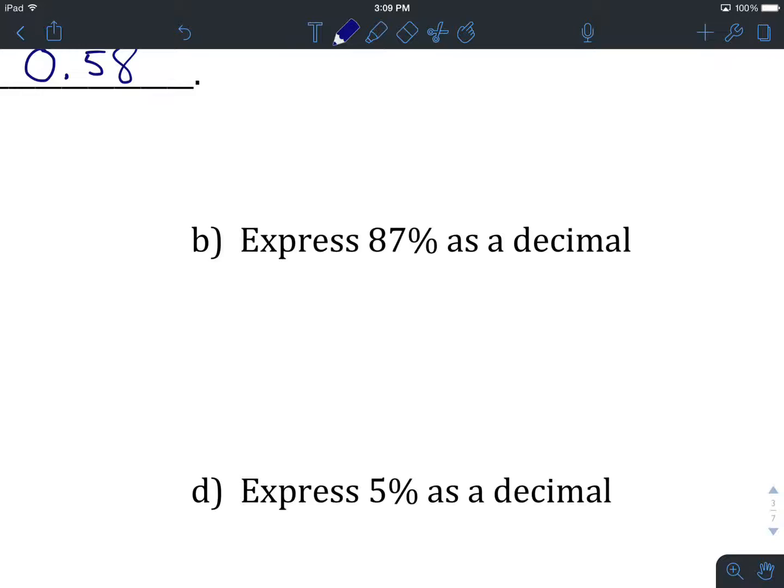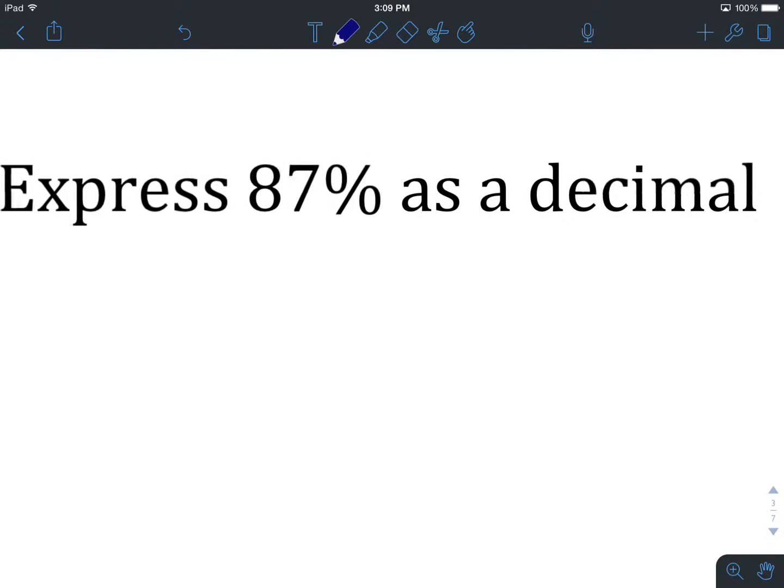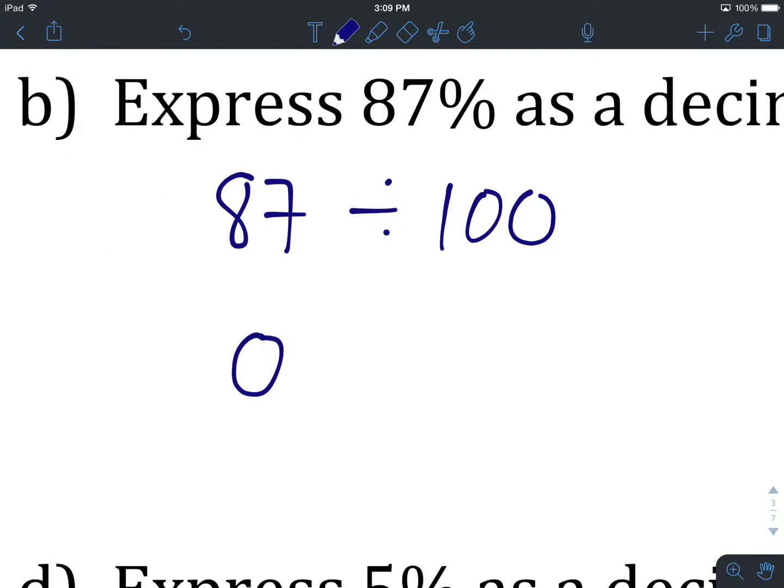Okay, you've tried 87% as a decimal. We start by taking the number in front of the percentage sign, dividing it by 100, type that into our calculator, we get 0.87.